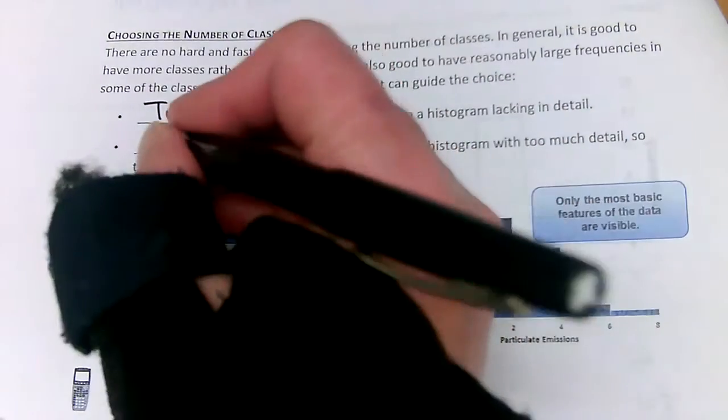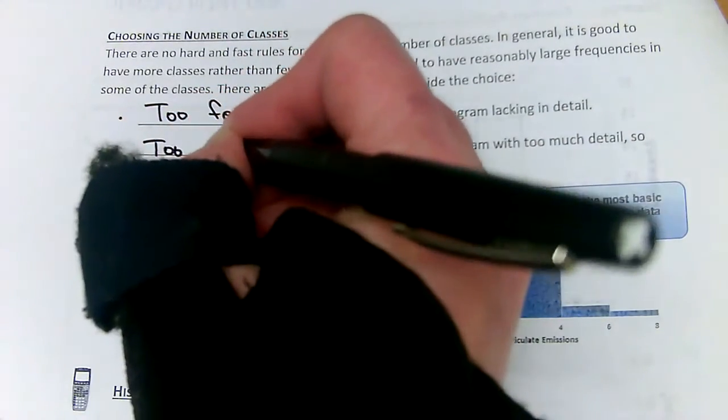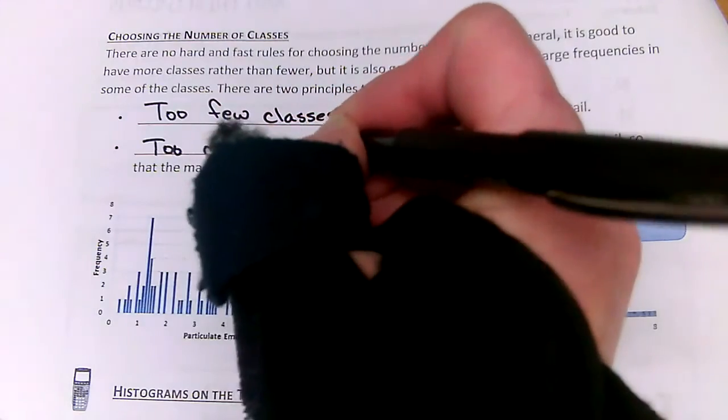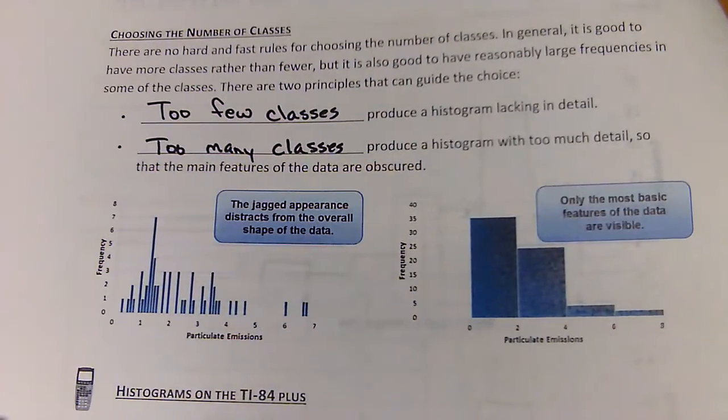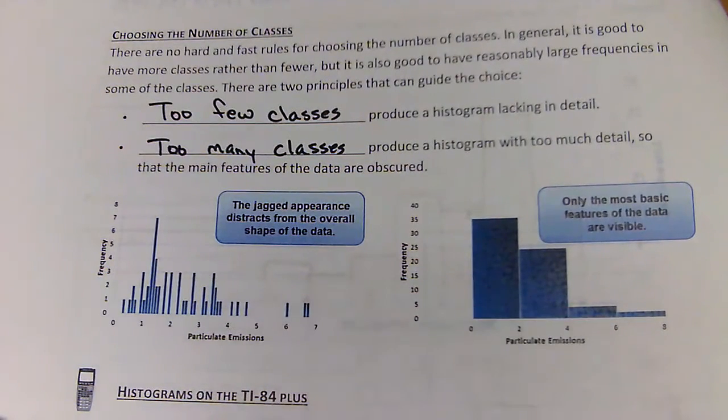If we have too many classes, we have too much detail and we really can't tell what's going on. I mean, look at this one. This is way too many classes.